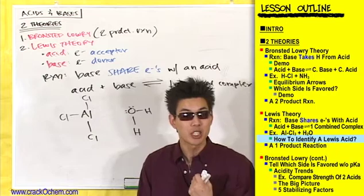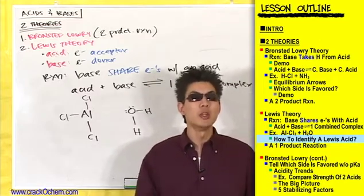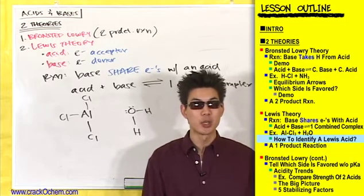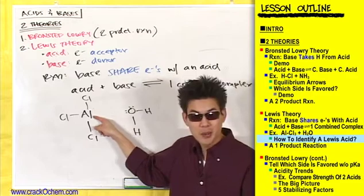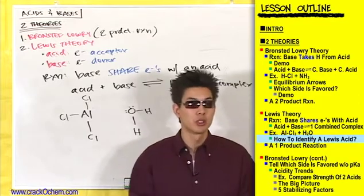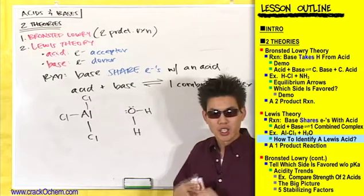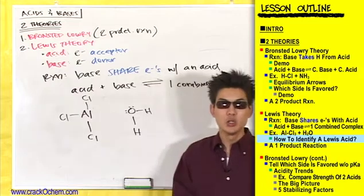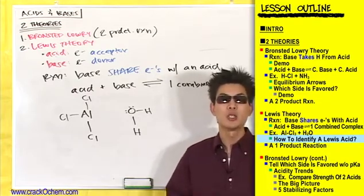Whenever you're looking for a Lewis acid — something that can accept electrons — you're really looking for an atom that has room for electrons to come in. An atom is full when it has an octet, eight electrons; there's no more room. But AlCl3 has less than eight electrons around aluminum, so it has room to accept electrons, making it a Lewis acid. Can water act as a Lewis acid? No — all its atoms are full: each hydrogen has two, oxygen has eight. But water has lone pairs, so it can donate electrons, making it our Lewis base.